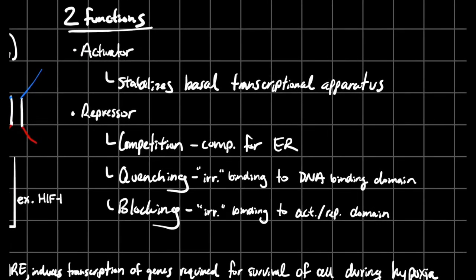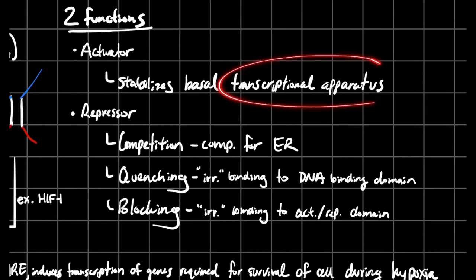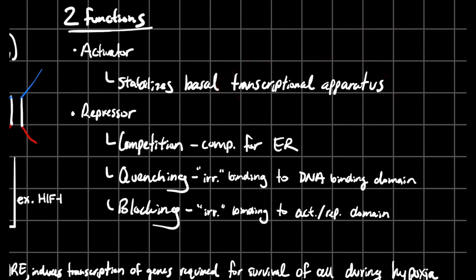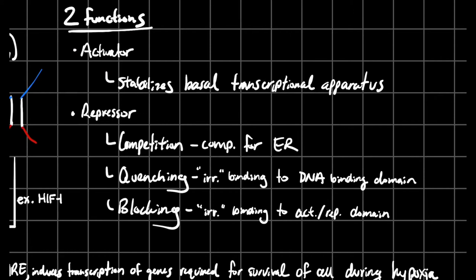Transcription factors have two major functions: they either function as activators or repressors of genes. For activators, they're going to stabilize that basal transcriptional apparatus, talking about RNA polymerase II. The basal transcriptional apparatus transcribes genes at a very low, basal level. If you add in an activator, these transcription factors help stabilize that RNA polymerase structure, and as a result, it speeds up the rate of transcription.